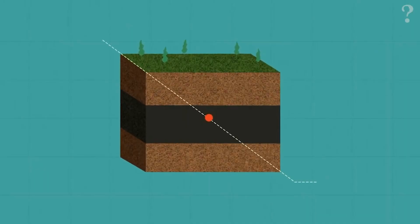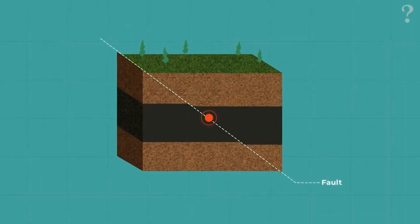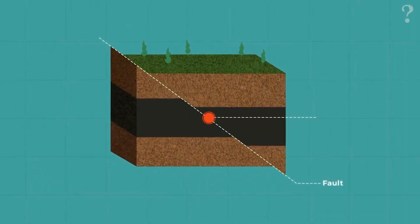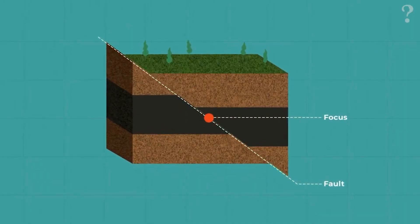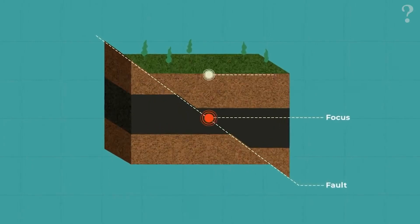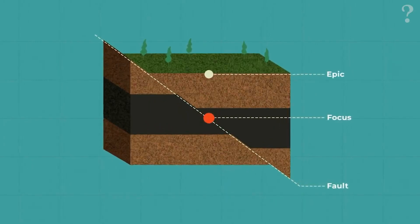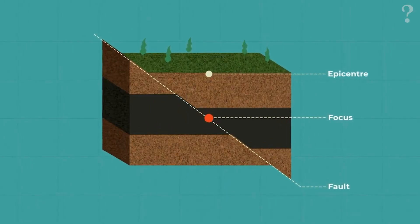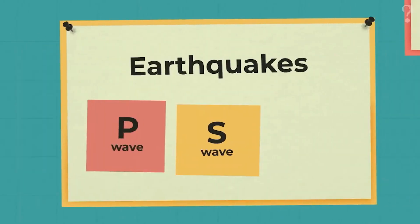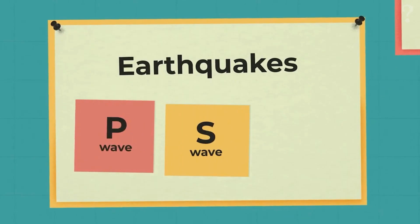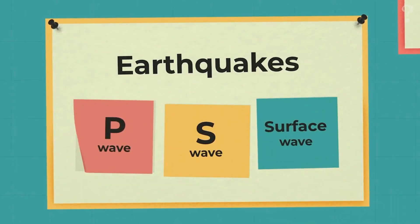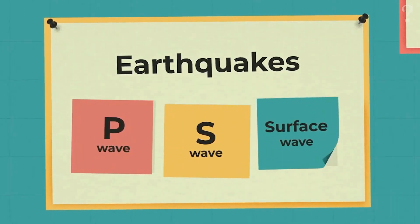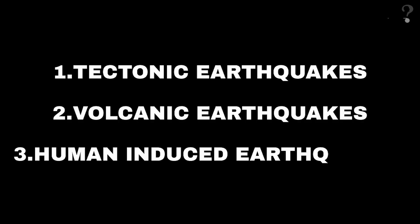An earthquake is a sudden and intense shaking of the ground caused by the movement of tectonic plates. Earthquakes can be triggered by the release of energy from the Earth's crust, leading to the movement of the ground and creating seismic waves. There are several types of earthquakes, including tectonic, volcanic, and human-induced earthquakes.